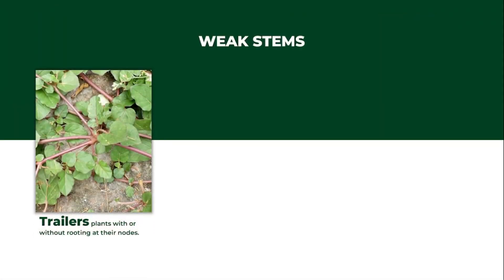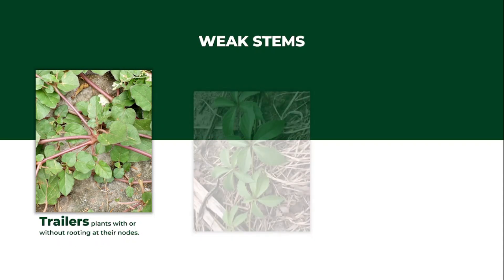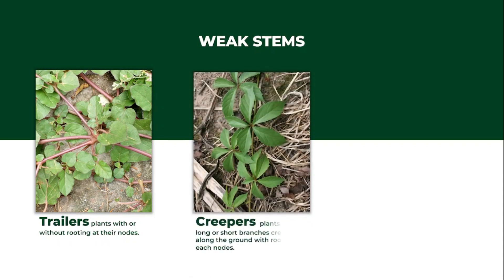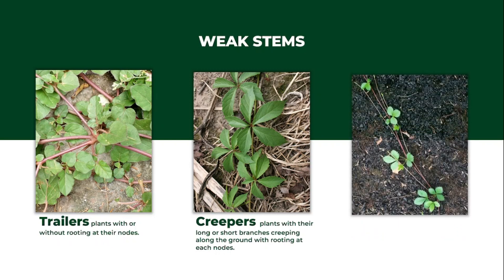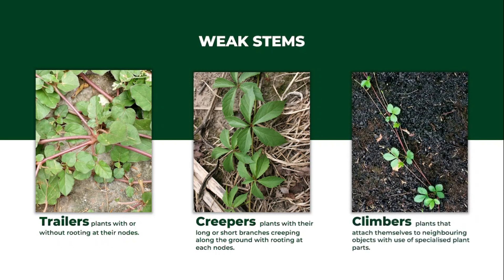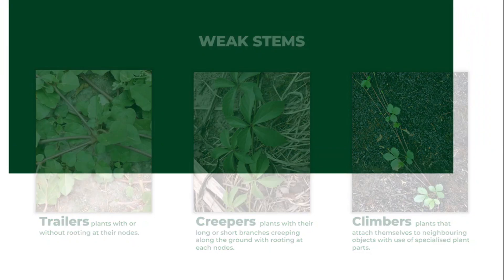Under weak stems we have the trailers, which are plants that may or may not possess rootings. Then we have the creepers, which are plants that possess rootings at each of their nodes and half branches while creeping on the ground. Lastly, we have the climbers, which are plants that develop special parts that enable them to attach themselves to objects while climbing.